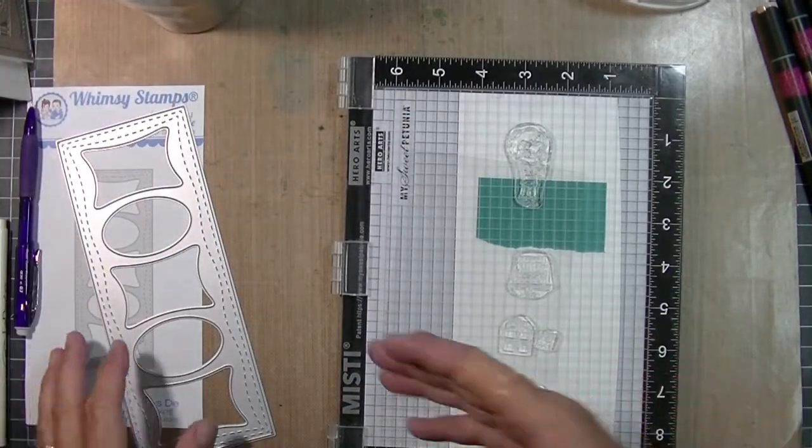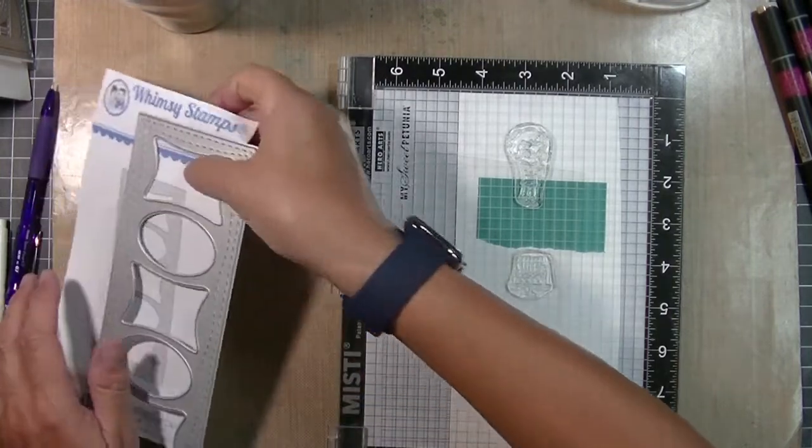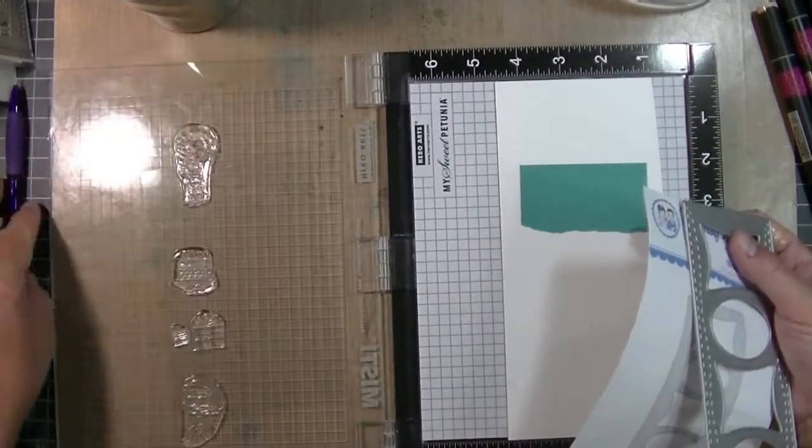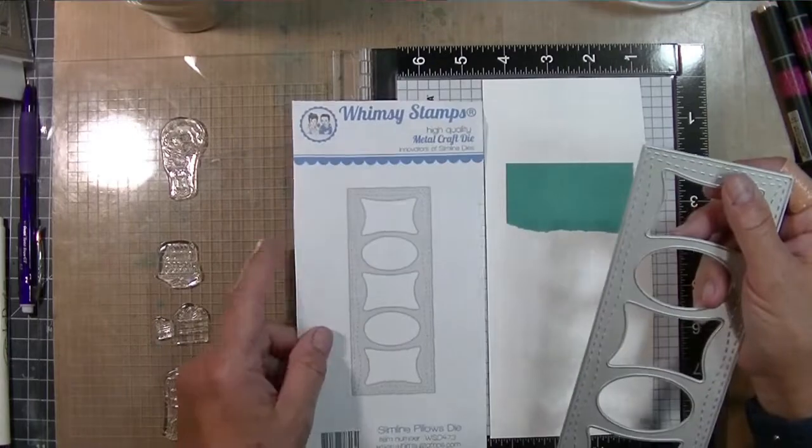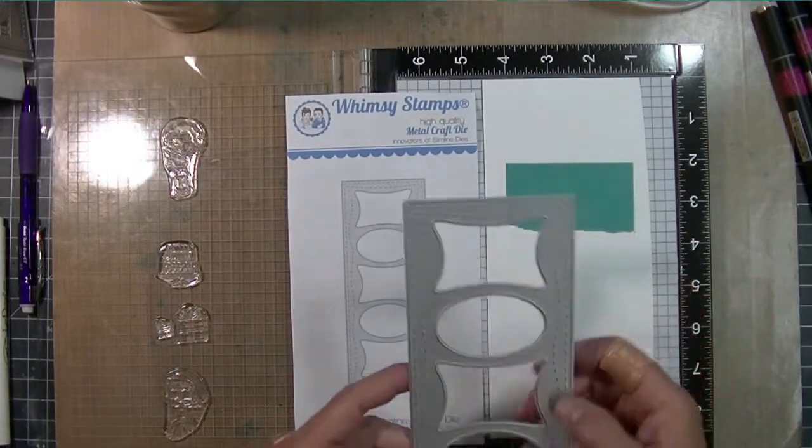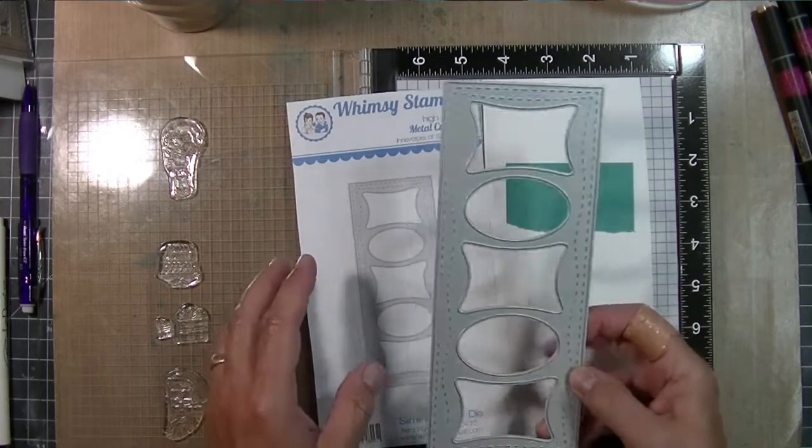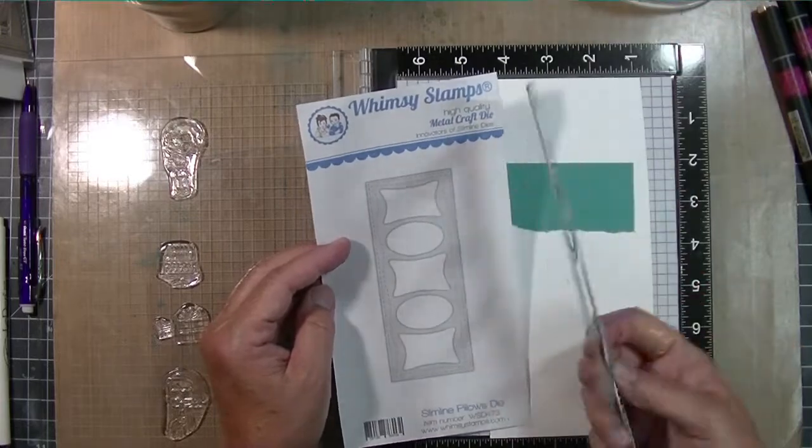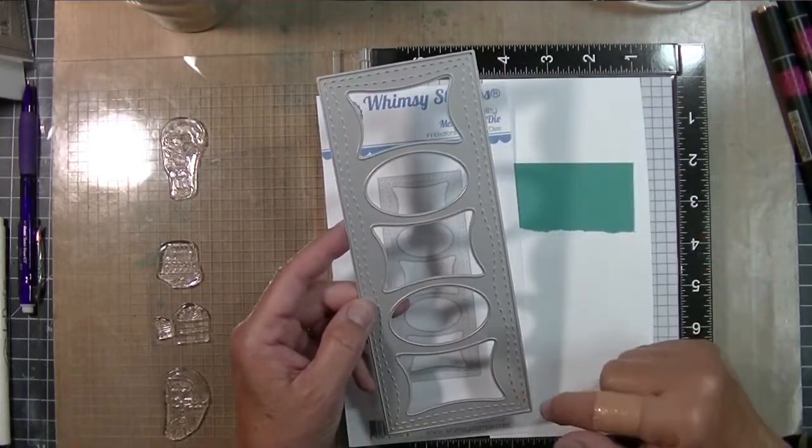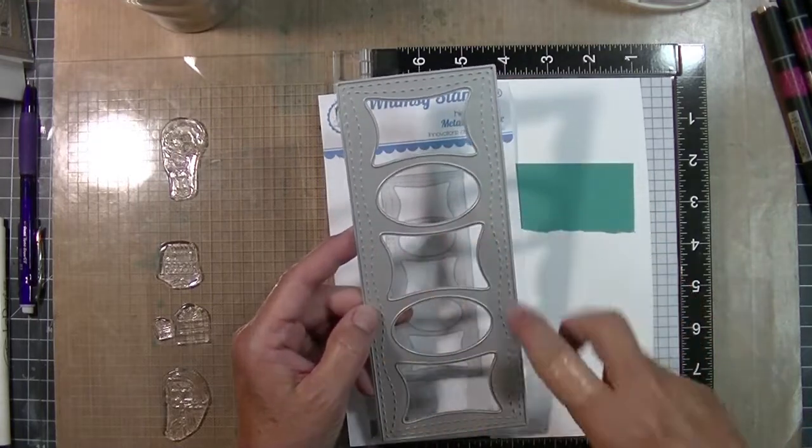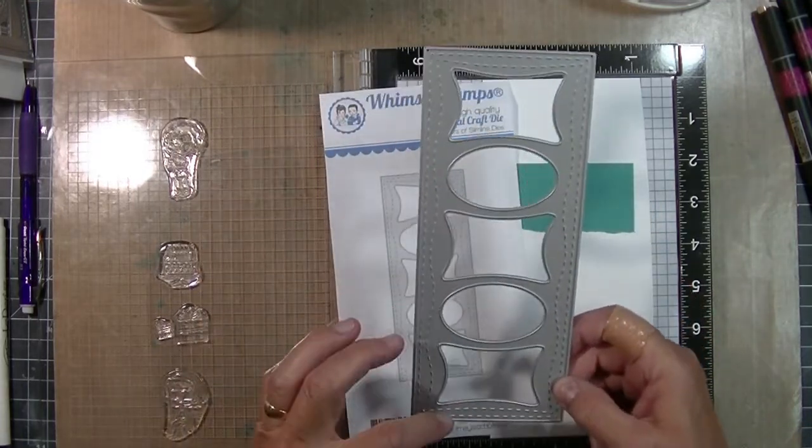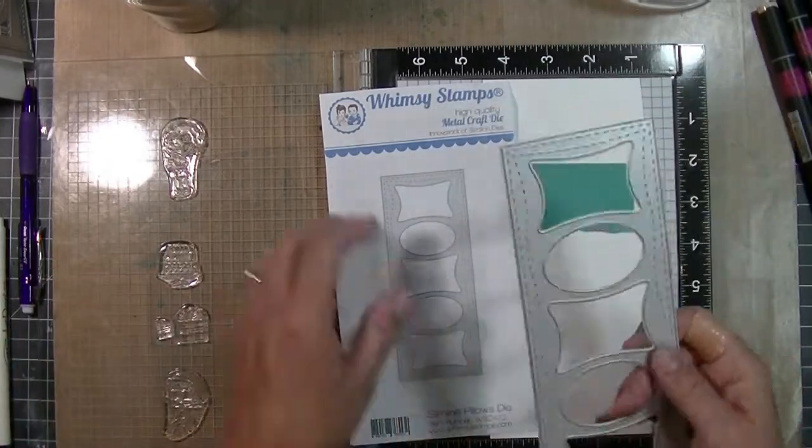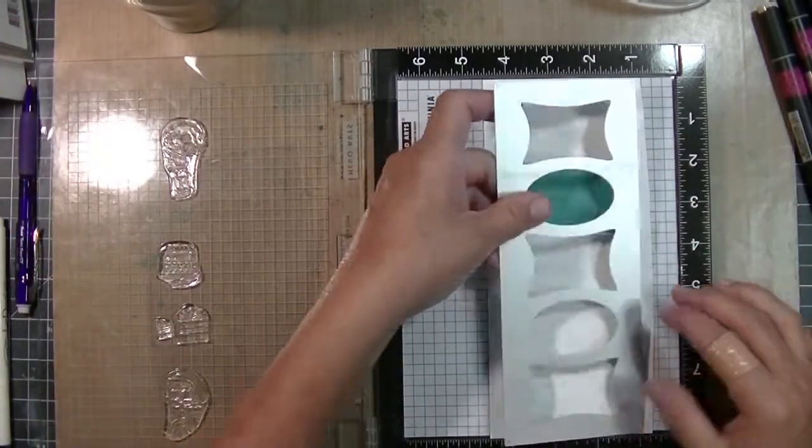So I thought I would make a slimline card. I got this Whimsy Stamps slimline die like a week or two ago. This is the slimline pillows die and I really like this. I just loved the quirky nature of those rectangles. I thought it was pretty fun with the rectangles, the like pillowy rectangles and the ovals. So I thought I would try this. And basically I am just going to, since this is the first time I've used it, I'm just going to put this down in my MISTI and I've already placed my stamps basically except for one.